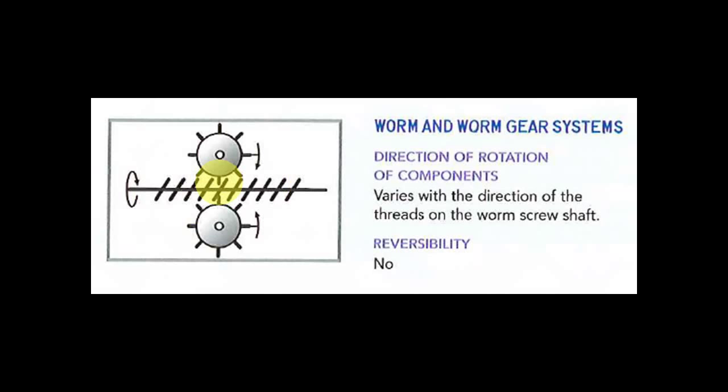Now, some of you may say, well, this is useless, sir. Where would you want to use a system like that? Actually, it could also be an advantage that it does only go in one direction. So, here, it varies the direction of the threads on the worm screw shaft. So, these things here that are at an angle, don't forget that they're called threads, which you saw last year. And notice, also, these gears are still going in the opposite direction.